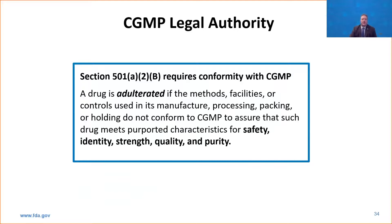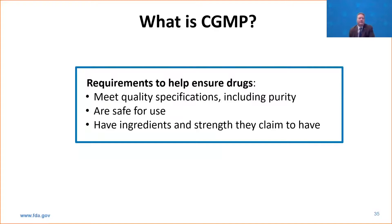CGMP is primarily what we deal with. The enforcement discretion guidance talks about when we will and won't enforce it. Section 501A, the good manufacturing practice statute, says that if the methods used and controls for manufacturing, processing, packing, or holding a drug do not conform with current good manufacturing practices, then they are adulterated. To get away from the legalese: GMP is really the requirements that help ensure drugs meet their quality specifications, including purity, are safe to use, and have the ingredients and strength that they claim to have on their labels.